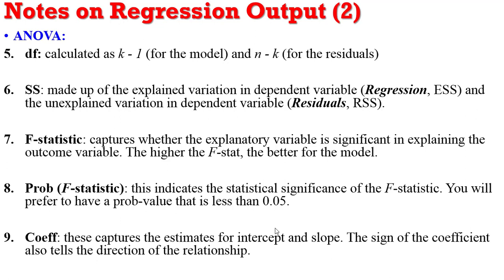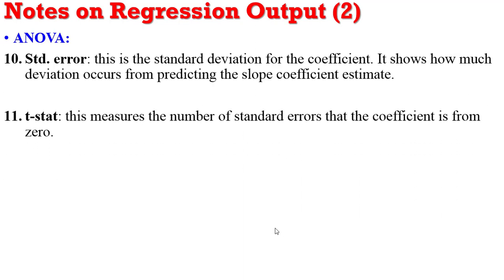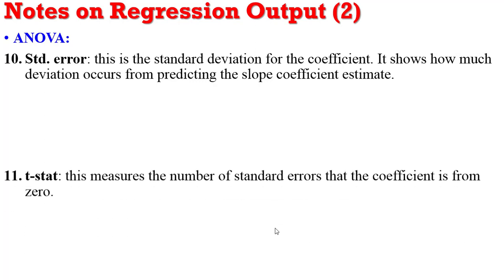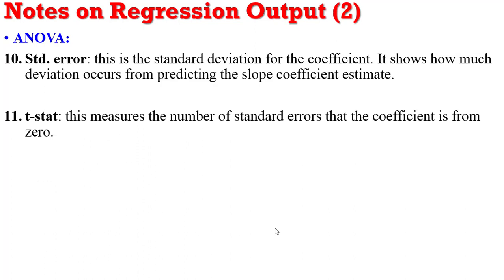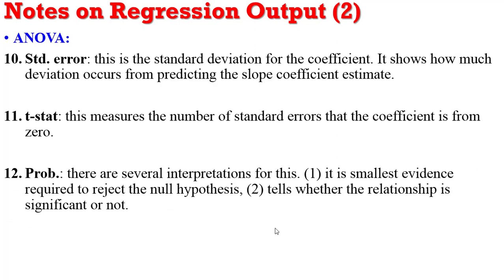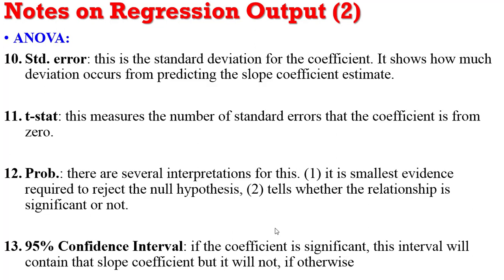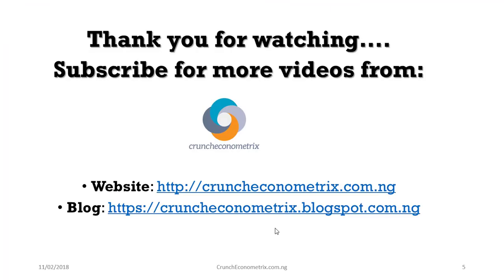The coefficient gives the estimates for both the intercept and slope coefficients. The standard error is the standard deviation for the slope coefficients, showing how much deviation occurs from predicting the slope estimate. The t-statistic measures the number of standard errors that the coefficient is from zero. The p-value tells you the smallest level of evidence you have to reject the null hypothesis. Lastly, the 95% confidence interval will always contain the slope coefficient if that coefficient is significant. Thank you for watching — subscribe for more videos from Quantry Econometrics, and visit the website and blog for more detailed tutorials.